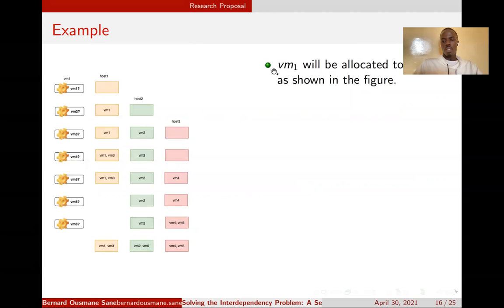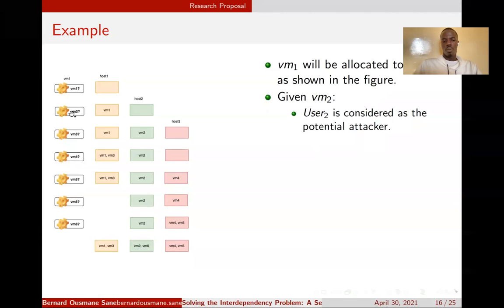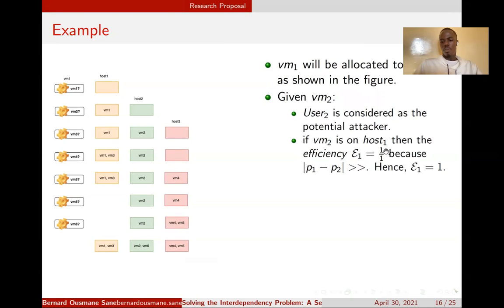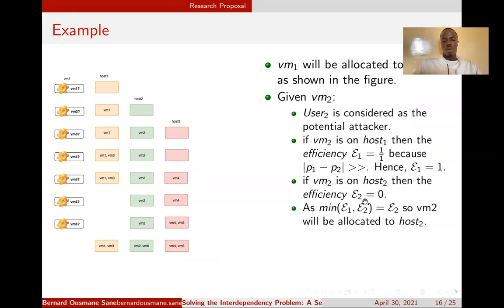Given VM1 from user 1, it is the first VM so we allocate it to host 1. Given VM2, VM2 is from user 2, so we treat user 2 as a potential attacker. If VM2 is on host 1, we evaluate the efficiency—the efficiency equals 1, meaning one VM from user 2 is able to do a co-residency attack. If VM2 is in host 2, then the attack efficiency equals 0. We compare the two efficiencies and find that efficiency 2 is smaller, so VM2 will be allocated to host 2.